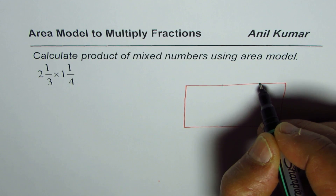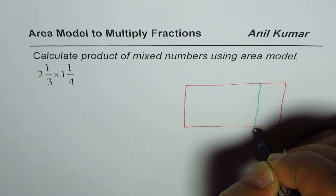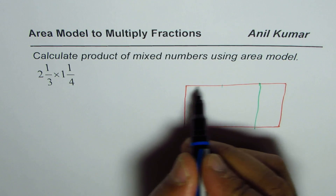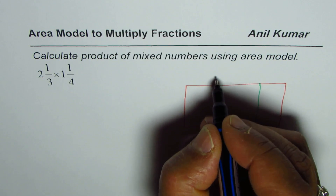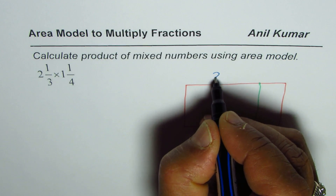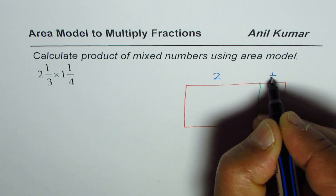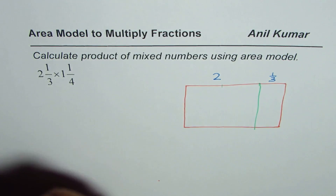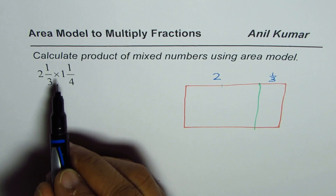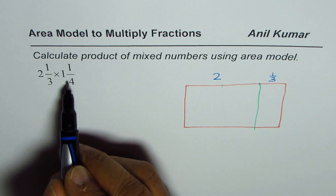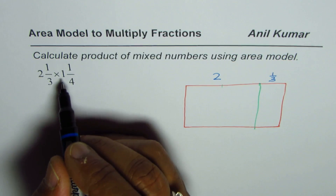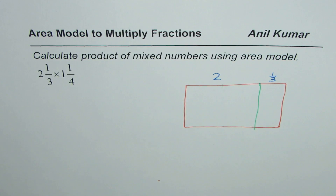I'm drawing a line here representing one side of this rectangle as 2 plus 1/3, which is 2 1/3. Now for 1 1/4, we represent the width of the rectangle as 1 1/4.